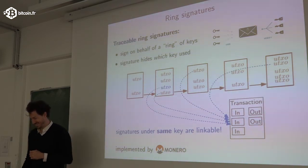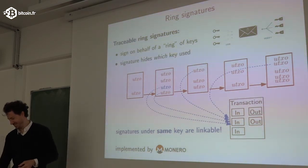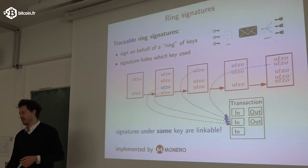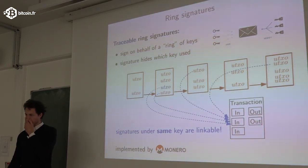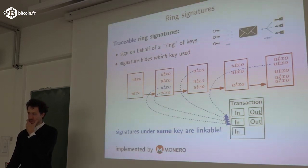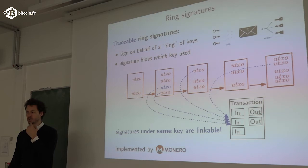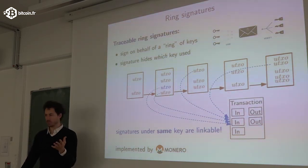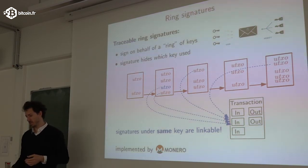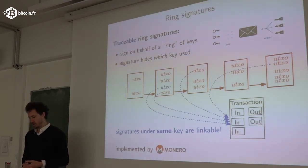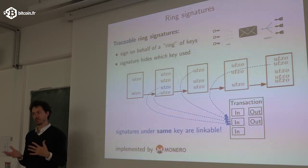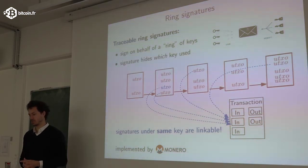Monero uses proof-of-work. I don't remember exactly which hash algorithm it uses, but I would suppose a different one than Bitcoin, because otherwise you could easily attack it. It uses these two features: hiding senders and hiding receivers.